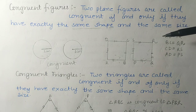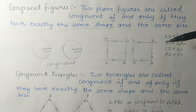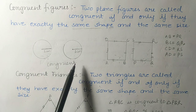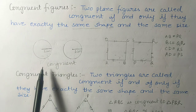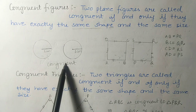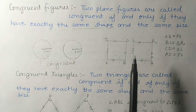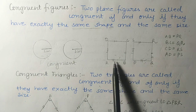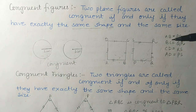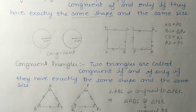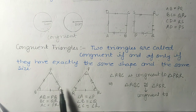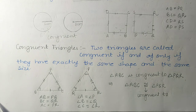We also covered congruent figures. If two figures are exactly the same in shape as well as in size, then those figures are known as congruent figures — like two circles or two squares of the same shape and size. Similarly, if two triangles are of exactly the same shape and same size, they are known as congruent triangles.